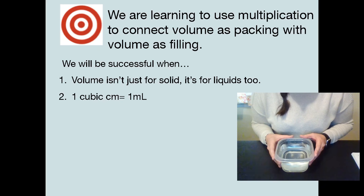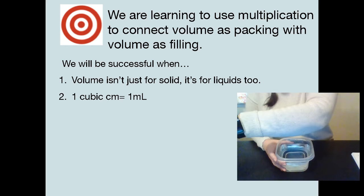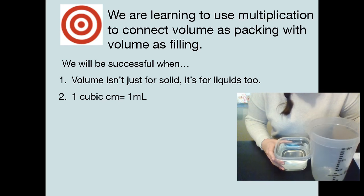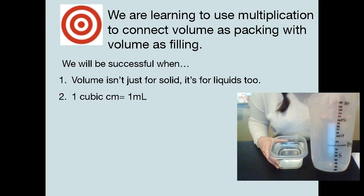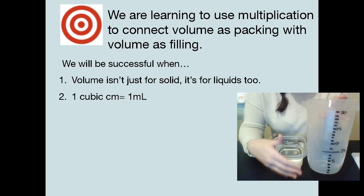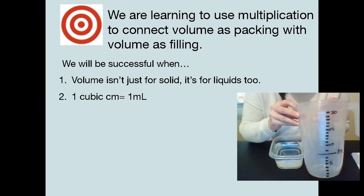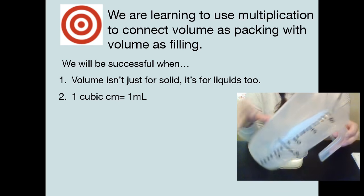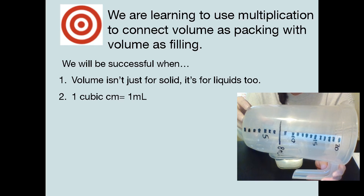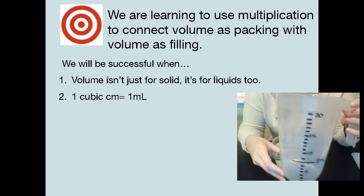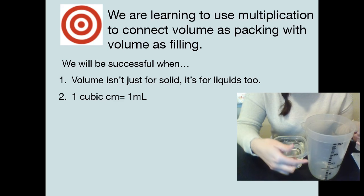Except we don't talk about liquids having a volume of eight centimeters cubed. We talk about it in terms of liters, or in this case, milliliters. And we do that by putting it in a graduated cylinder. I didn't have a graduated cylinder, so I took a picture and I turned it into a graduated cylinder. And what's cool about this is it's just like a number line. If you look at that here, it's just like a number line that you would see in school, except it's standing up and down. It's vertical.